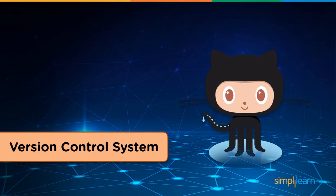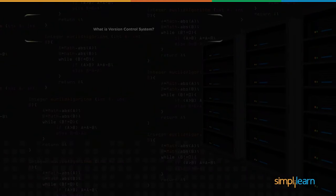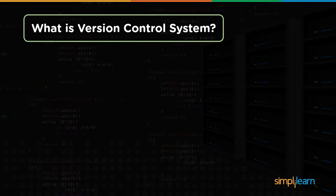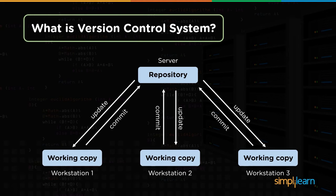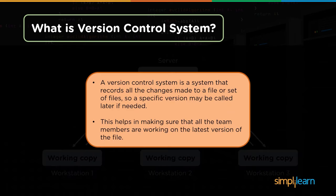Let's have a look at what is a version control system. Version control systems are software tools that help in recording the changes made to files by keeping a track of modifications done to the code. There is one repository and each user has their own working copy. The changes are committed to the repository, which are possible to be seen by others.